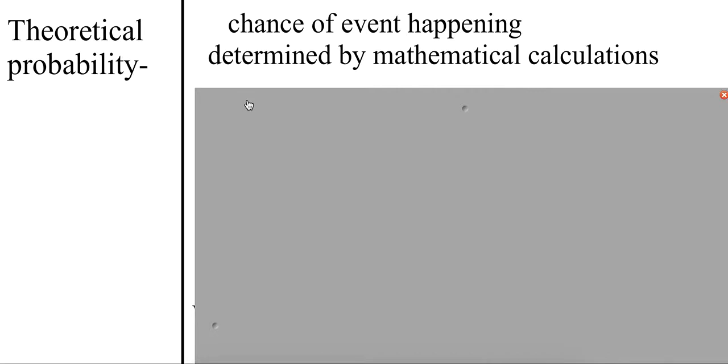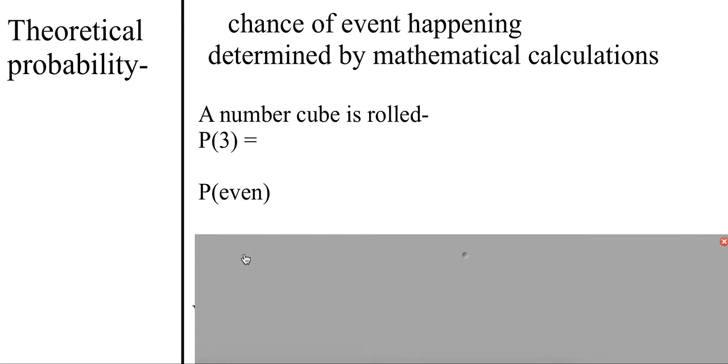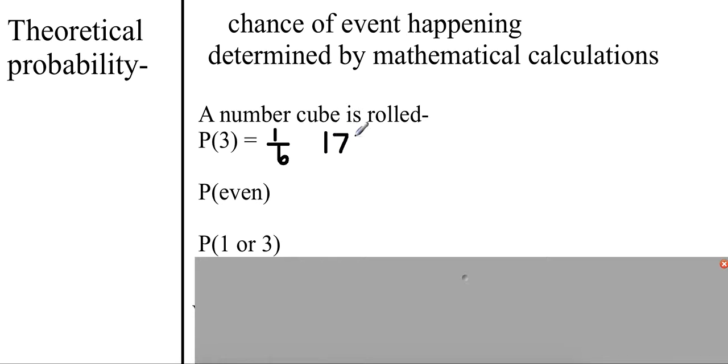For instance, let's do an example of a number cube. If a number cube is rolled, you have six possible outcomes: 1, 2, 3, 4, 5, and 6. So the probability of rolling a 3 would be 1 out of 6, because there's one 3 on the dice. Which is, if I put that in my calculator, 0.16 repeating, which rounds to 17%.